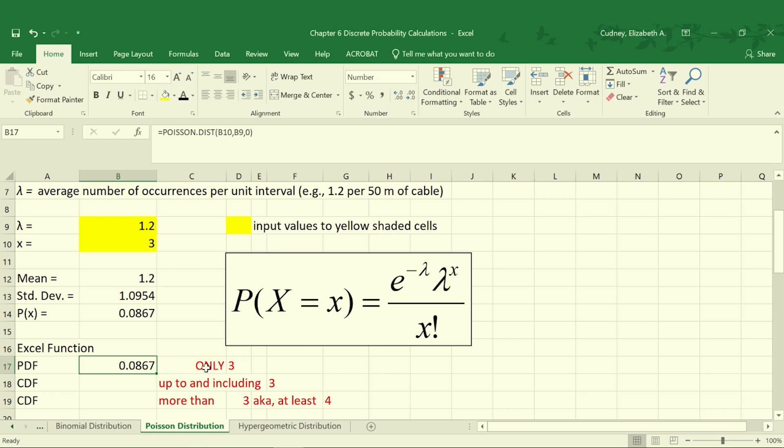So that's only three defects. Our CDF will be up to and including three defects. So here we're going to add in the probability of zero defects, one defect, two defects, and three defects. So it's the same equation as before for a PDF. However, at the end, we are making sure it's cumulative, so we have a 1 in our equation. And in this case, then, there's a 96.62% that there are up to three defects in those 50 meters of cable.